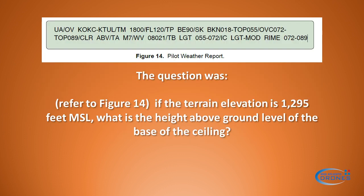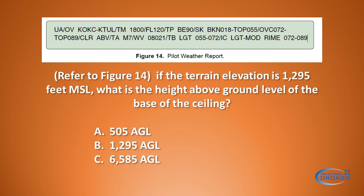The question where this PIREP appeared states: refer to Figure 14 — if the terrain elevation is 1295 feet MSL, what is the height above ground level of the base of the ceiling? It gives three answers: 505 feet, 1295 feet, and 6585 feet AGL.